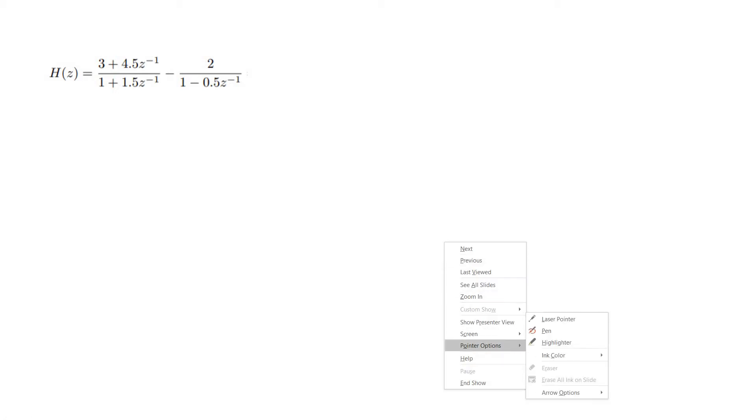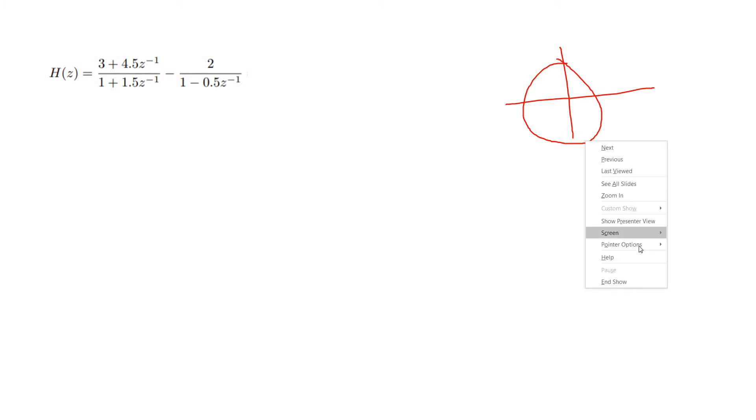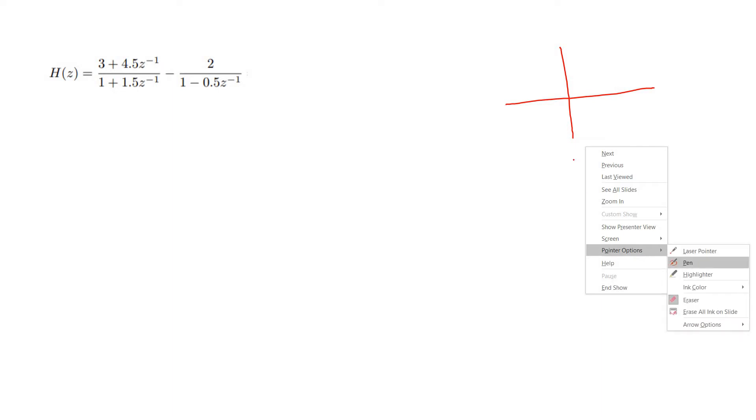So see what the idea is. Suppose I have one pole-zero plot like this. Let me draw the unit circle again. So suppose I have the unit circle like this, and now I have one pole outside the unit circle at this particular point, so the system is an unstable system.